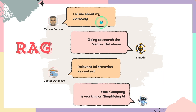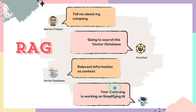But using RAG, when you ask the same question — 'tell me about my company' — it's going to search the vector database, and from the vector database it's going to get relevant information as context. This database will contain information about your company, and then that relevant unstructured information is sent to the AI, which is then able to respond: 'Your company is working on simplifying AI.' That is the RAG process — using existing information as context for the large language model.